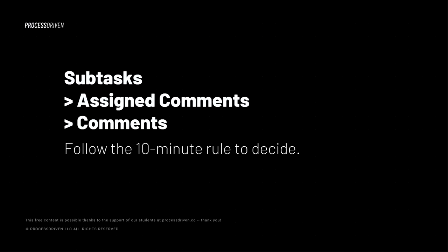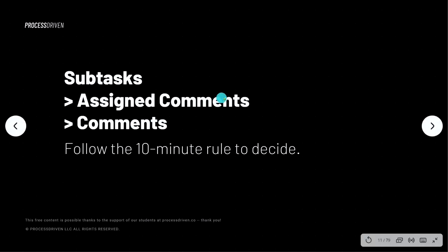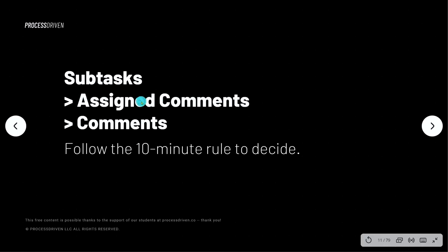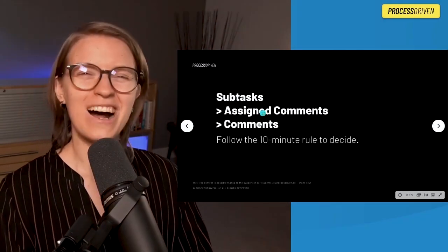Subtasks are things people can schedule on their calendar and keep track of more easily, whereas assigned comments just kind of float there. If an assigned comment cannot be done quickly, it should be promoted to a subtask instead. This is a simple triage rule you can set in place so people know when to do what — because when people aren't certain, they tend to just send an email instead, which reference the last point, is not ideal.